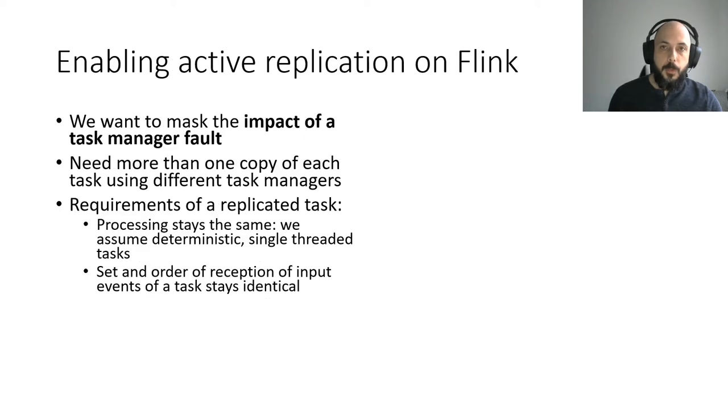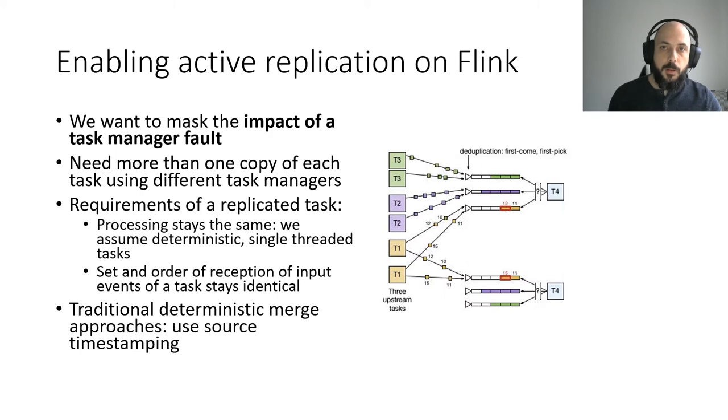As we specified before, our goal is to mask the impact of a task manager fault. To achieve this, we will need several copies of tasks deployed on different task managers. In order to respect consistency, each replica should ensure the same input and output of the original task in the same order. The traditional approach to achieve this is to use source timestamping. We present an example on the right, with three tasks T1, T2 and T3 sending events to a task T4, each one composed of two replicas.